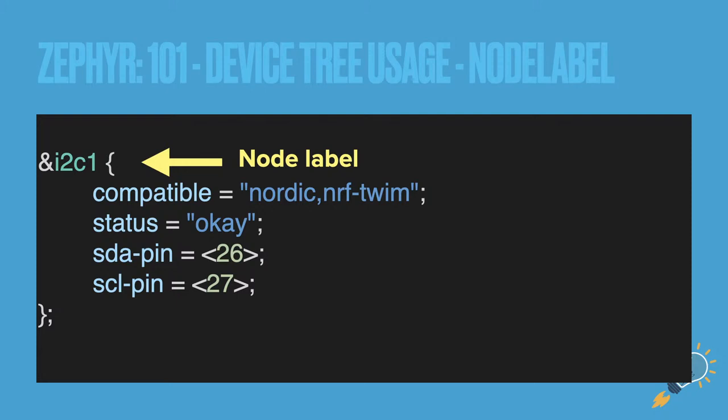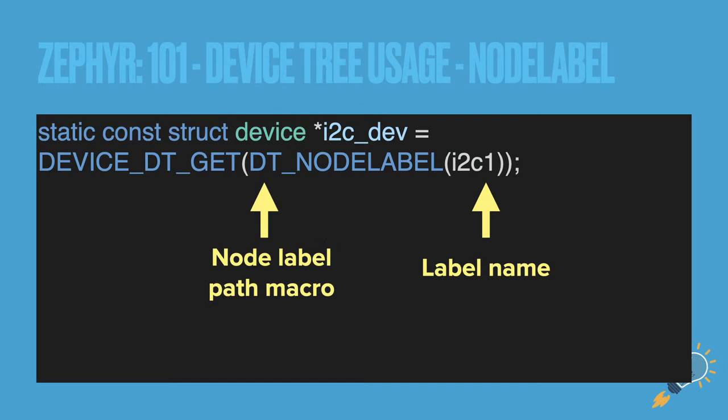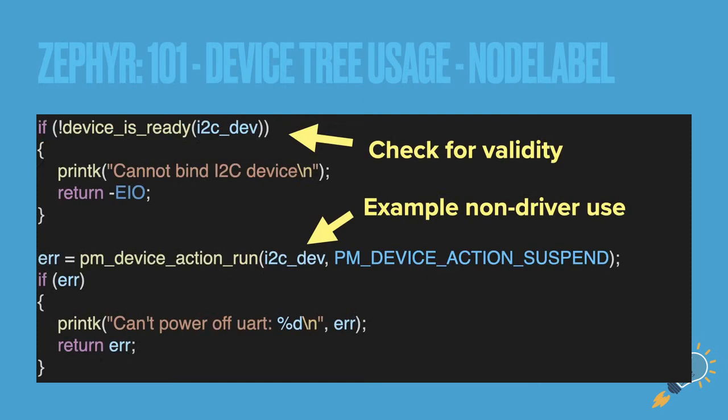For example, I2C is defined back in the board definition, and we can pull it using `device_dt_get` with the node label — in this case `i2c1` — so we can actually pull the device without having to use any drivers at all. As always with devices, you check if it's ready; if not, you abort, because using an unready device will cause all types of issues.